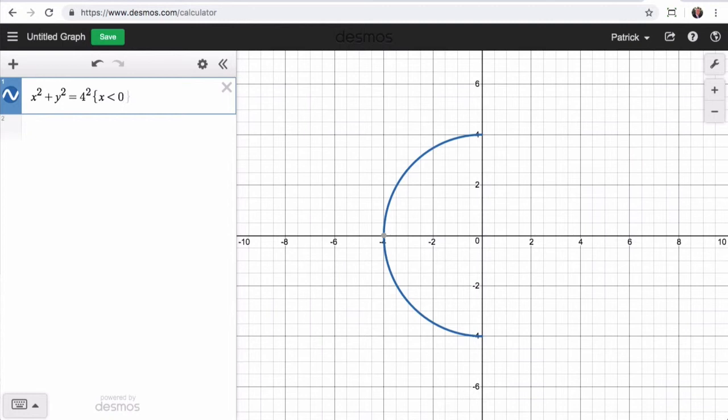Now obviously if I wanted the other half of the circle, then I would have x is greater than 0.